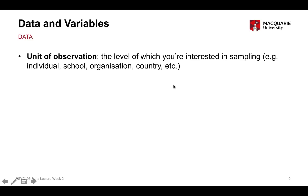Moving to data and variables — a few more definitions. A unit of observation is the level of observation that you're interested in sampling. For the majority of time in psychology, linguistics, and education, the unit of observation is the person. But it's not always — maybe we're interested in daycare centres, looking at how many staff are employed or what educational programmes are running. In that case, the unit of observation is the daycare centre. If I'm interested in organisations and how they train employees, the unit of observation is the organisation itself.